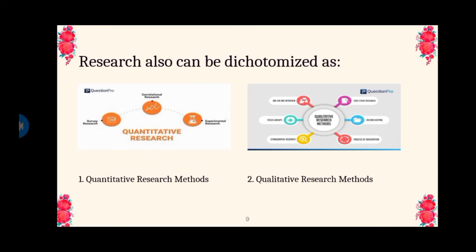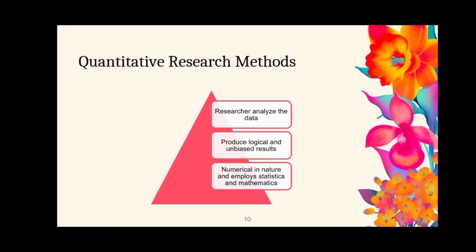Research also can be dichotomized as quantitative and qualitative. Quantitative research methods involve a problem-solving approach that is highly structured in nature and that relies on the quantification of concepts. Quantitative research method is a systematic investigation of observable phenomena through computational, mathematical, and especially statistical techniques. Hence, in quantitative research methods, the researcher analyzes the data with the help of statistics and hopes that the figures produce logical and unbiased results.